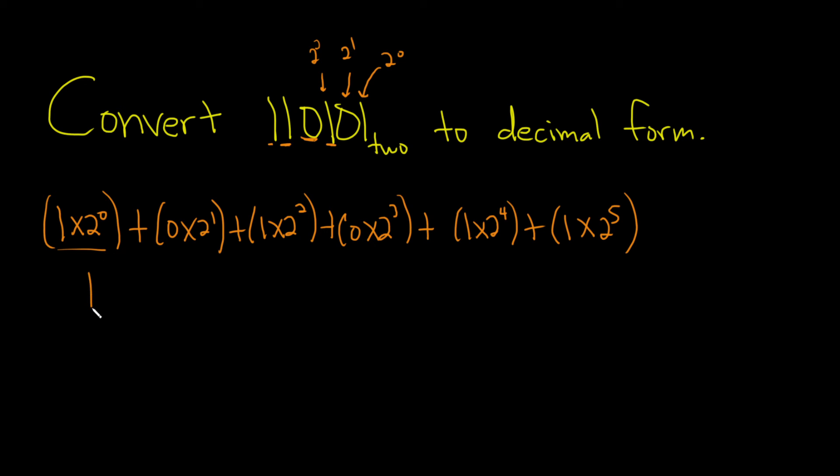So 1 times 1 is 1, plus this is 0, plus this is 4, plus this is 0 because there's a 0 here, plus this is 16, plus and then this is just 32.